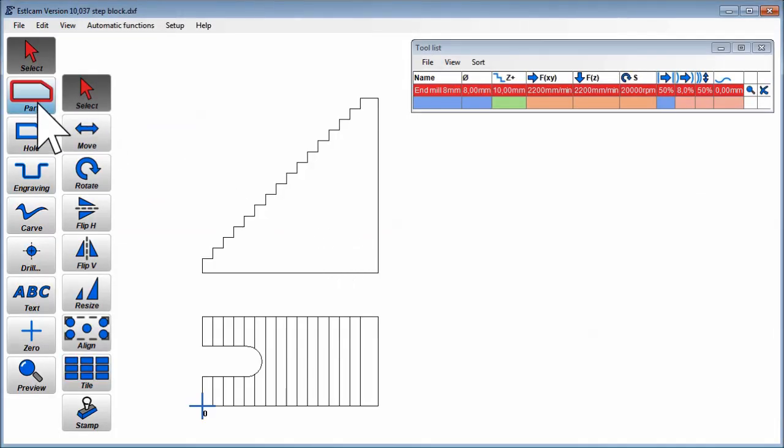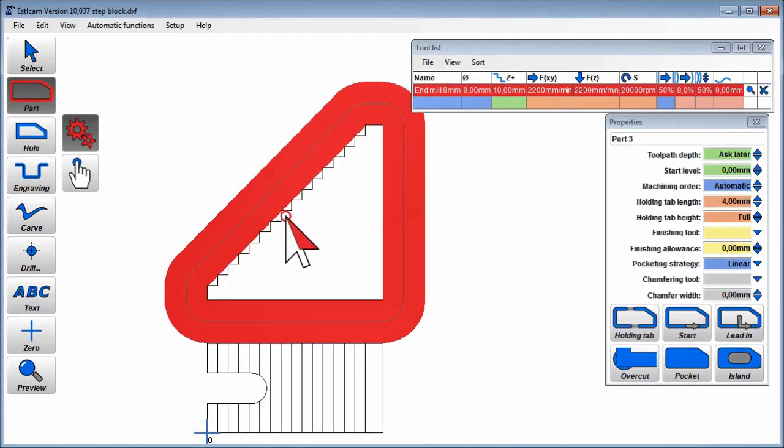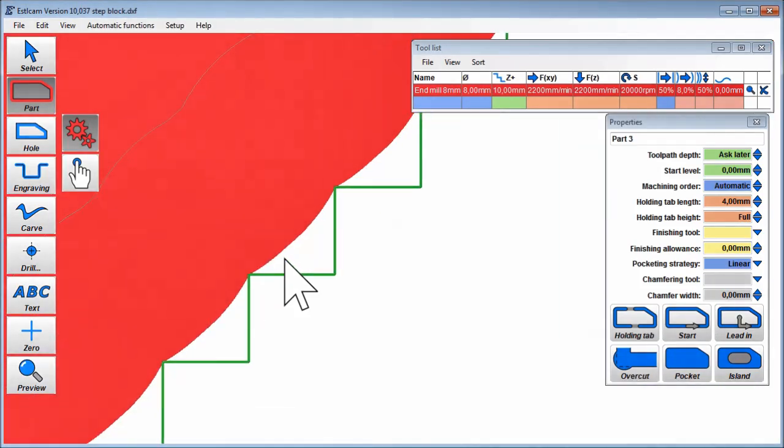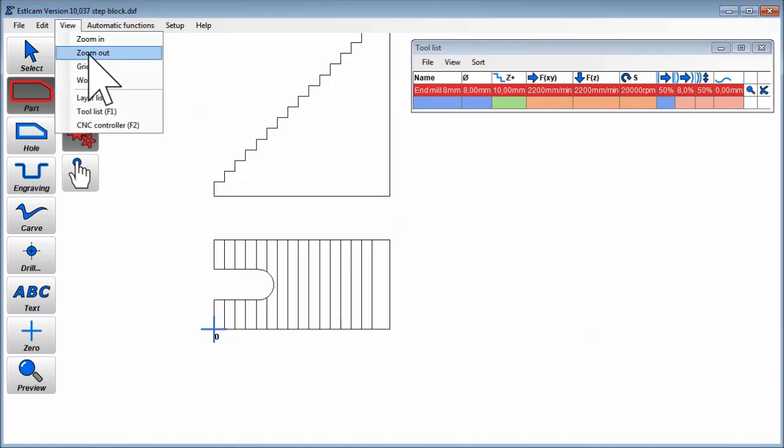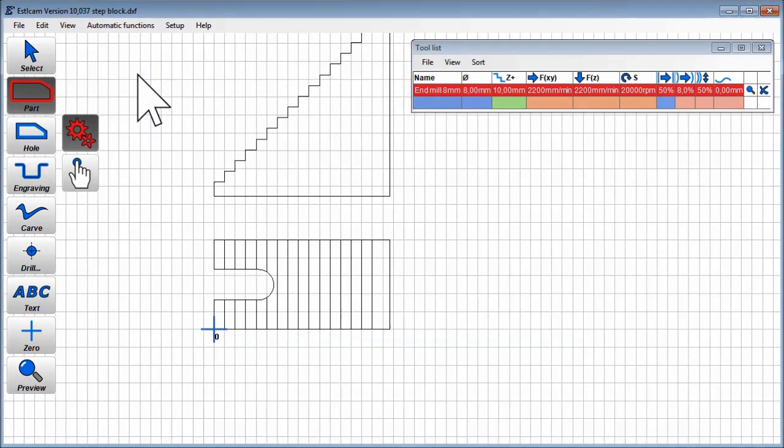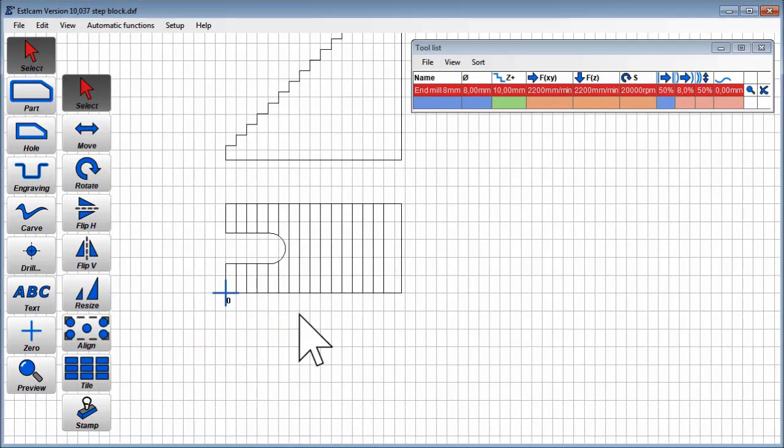The only issue concerning programming is that we cannot machine it from the side view. It is not possible to machine sharp corners this way. We need to work with the top view and create the steps as individual engravings.